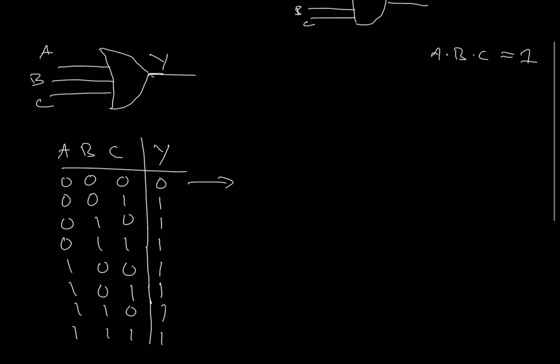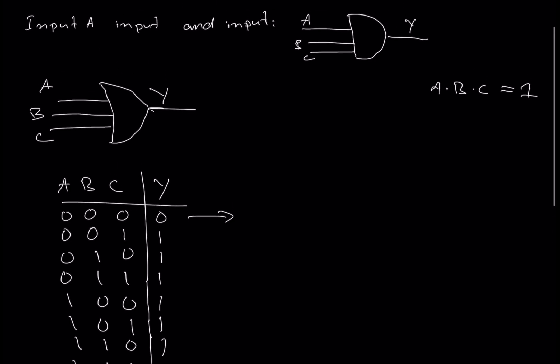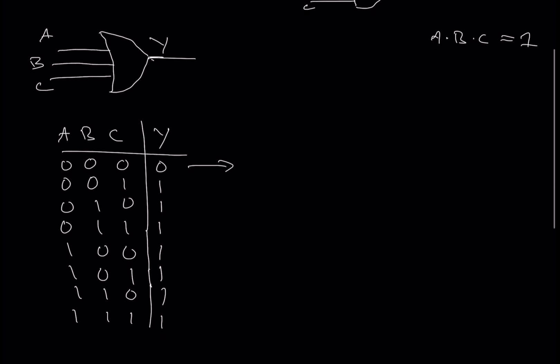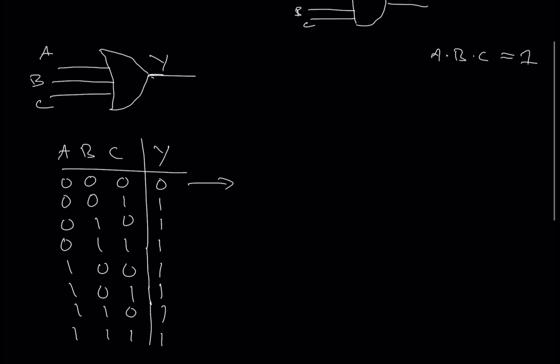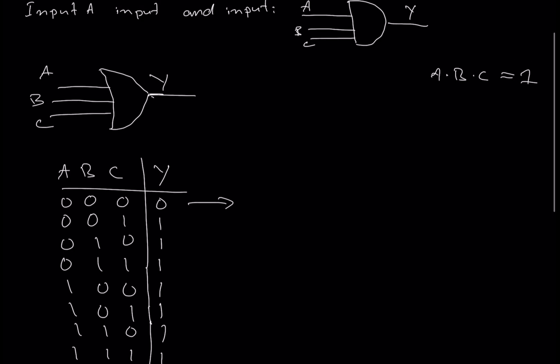The main question is: what if you don't have a three-input AND gate or three-input OR gate? If the lab or company only offers two-input gates, there's nothing to worry about — we can build a three-input gate using two-input gates.